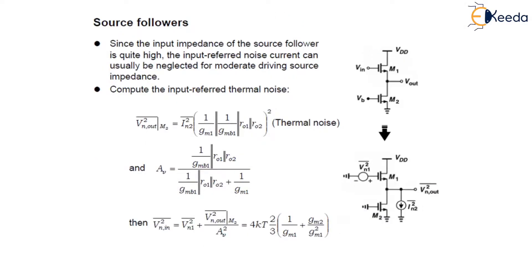As shown in the figure, since the input impedance of the source follower is very high, we can neglect the input referred noise current for moderate driving source impedance.